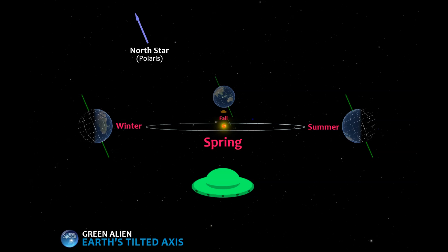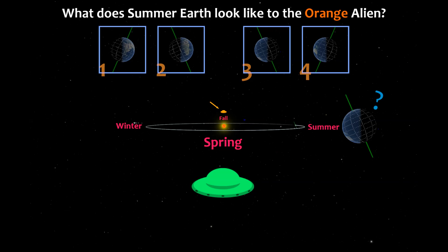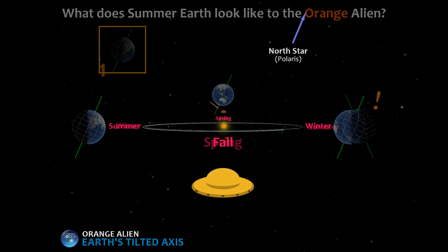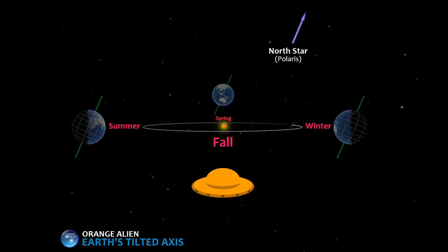But what about the orange alien, who we totally forgot about? He's way off back there, beyond the opposite side of the orbit. Can you figure out what the Summer Earth would look like to him? From the orange alien's perspective, the northern axis points up and to the right towards the North Star, just like it does in every other location all 365 days of the year. And just to round it out, here's the Fall Earth too.